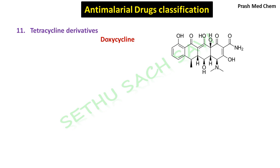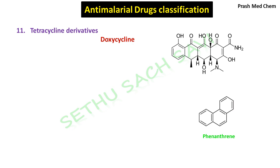In this structure, you can see three benzene rings fused together, where one of the benzene rings is fused as a branch. This is called phenanthrene. If you add a methanol group to this, it is called phenanthrene methanol. Halofantrine and lumefantrine are drugs which are derivatives of phenanthrene methanol having anti-malarial action.